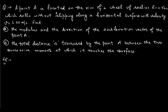A point A is located on the rim of a wheel of radius r = 0.50 meter, which rolls without slipping along a horizontal surface with velocity v = 1 meter per second. Find the modulus and the direction of the acceleration vector of point A, and the total distance s traversed by point A between the two successive moments at which it touches the surface.